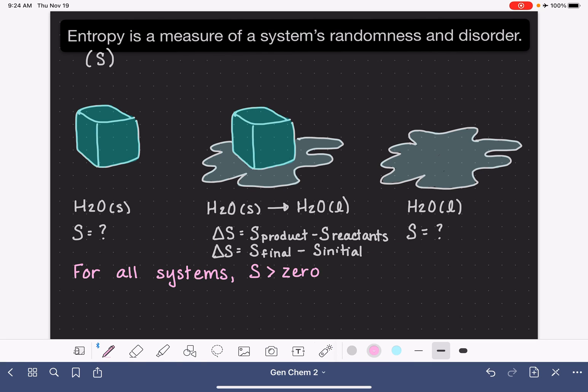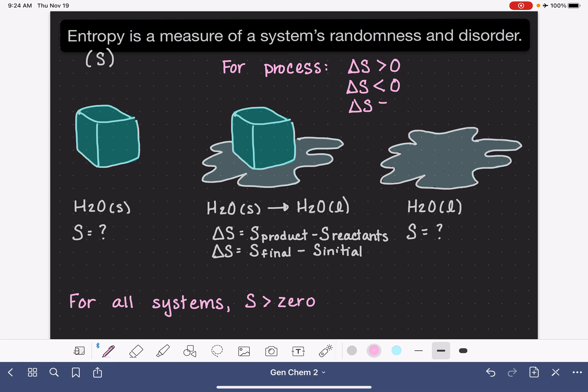Now for a process, the change in entropy is not restricted the way that the value of entropy is for a system. So for a process or reaction, the change in entropy could be greater than zero, it could be less than zero, or it could even be equal to zero, depending on exactly what's going on.